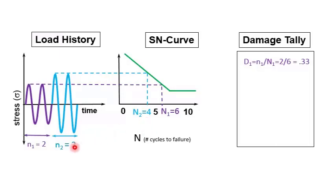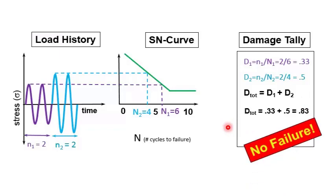So now we have two cycles where we'd normally have a failure of four. So we have two out of four, or a damage of 0.5. We can add up the damage thus far, and we would find that the total is 0.83, and we'd be glad to know that there is no failure yet.